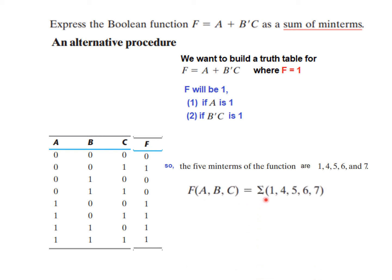And so we can write it in the simplified form, that F(A,B,C) is summation of 1, 4, 5, 6, 7. And this is obviously quite simple, simplified form, if you could understand the technique.